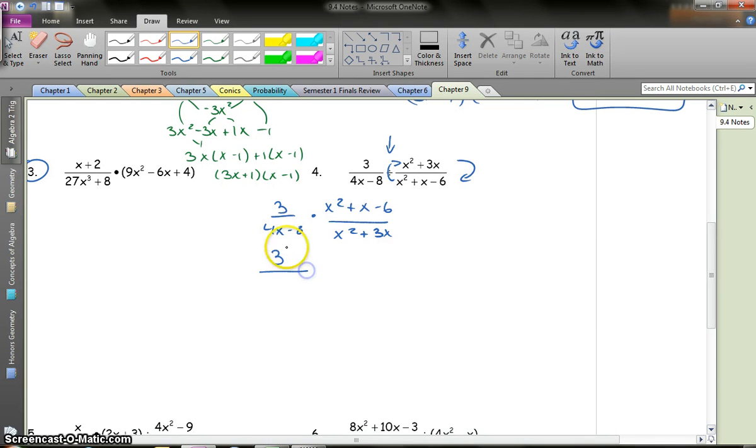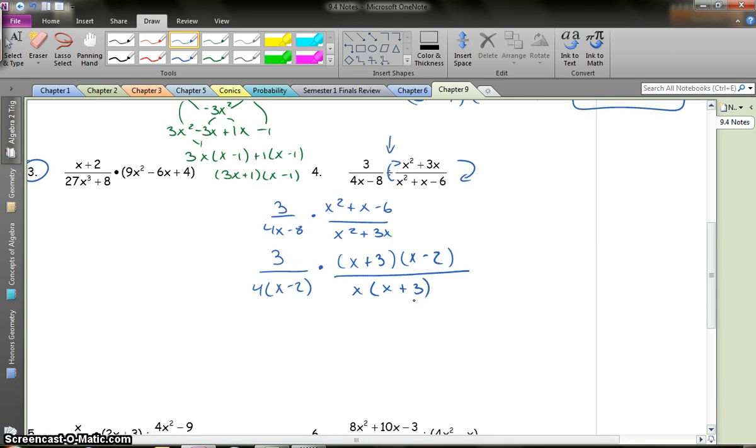3 can't be factored. 4x minus 8. Well, the GCF is 4. So I'm left with x minus 2. Now let's go over here. Two numbers that multiply negative 6 and add to 1. Well, that gives me x minus 3. 3x plus 2. Nope. x plus 3. x minus 2, right? x squared plus 3x minus 2x minus 6. Perfect. All over here. Well, the first thing I look for is a GCF. So I'm left with x plus 3.